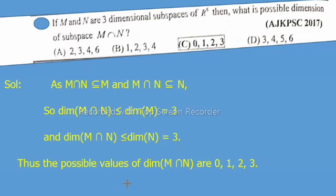Thus the possible values of dim(M ∩ N) are 0, 1, 2, 3. So option C is correct, which is the required solution.